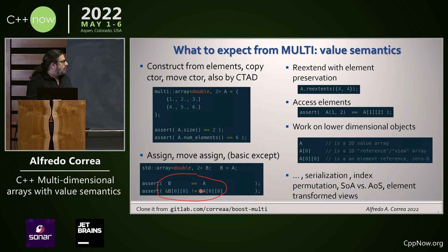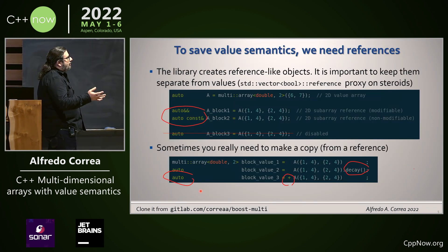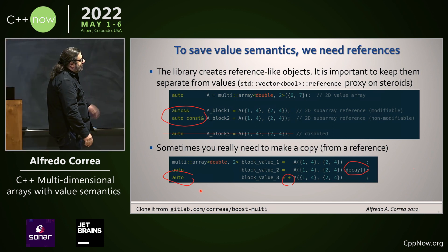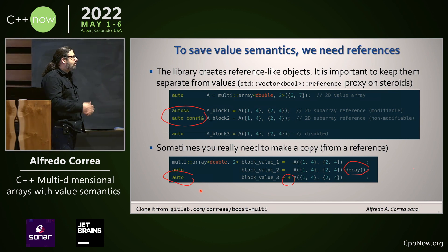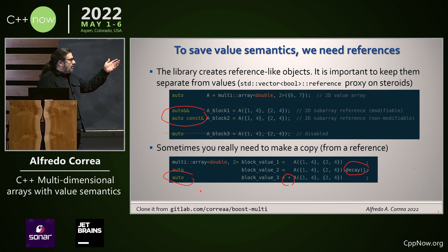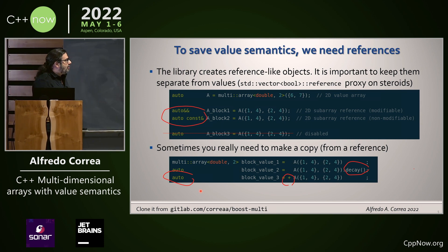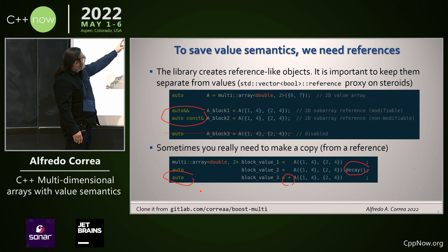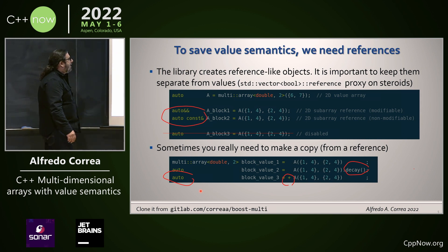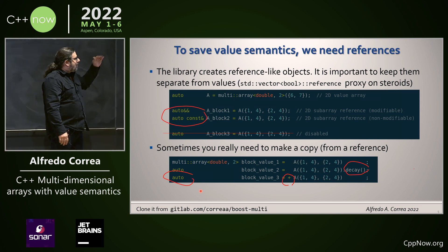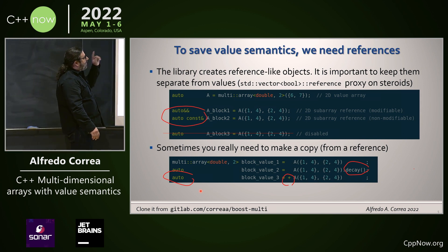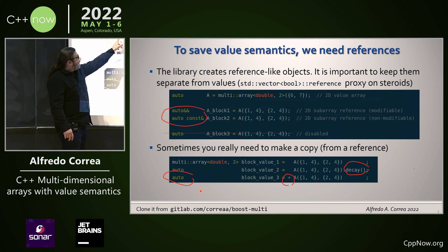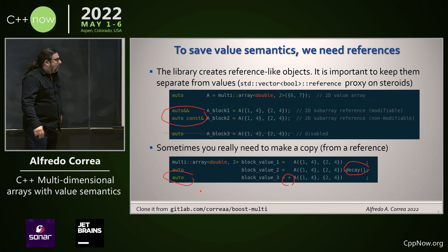We offer other things that value types should give. To say value semantics, you need references. What the library does is each time you take a block or sub-block, something of lower dimension in the array — and they don't need to be dimension two, they can be much higher dimension — you generate reference-like objects. The discovery is that we can assign these to references in the language, which survive because of lifetime extension. These reference-like objects are always marked with ampersand, and const-ampersand propagates into all the semantics.